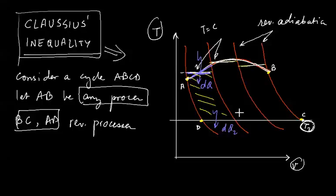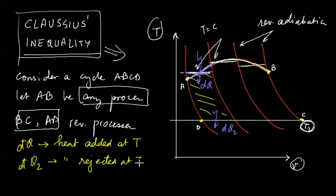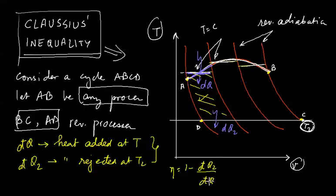For this elementary cycle, dQ is the heat added at temperature T, and dQ2 is the heat rejected at temperature T2. The efficiency of this cycle can be written as 1 minus dQ2 by dQ.